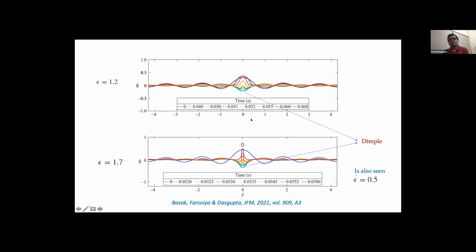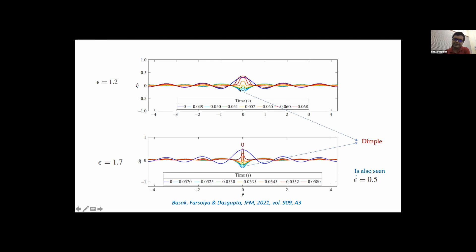We wish to understand this, and we can clearly see it is a nonlinear event because we started with a single eigenmode. If the phenomenon were linear, energy couldn't be transferred out of that single mode. If you look at the interface shape at the instant with the small dimple, it is clearly not a Bessel function — not a single eigenmode anymore. There has been a transfer of energy into other modes, which cannot happen through a linear mechanism. We must look for nonlinear mechanisms to understand what is happening.